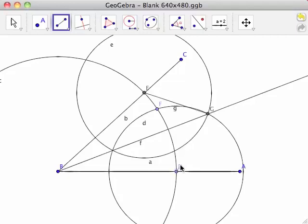BE and BD are congruent because they are radii of the same circle. EG and DG are congruent because they are radii of congruent circles. BG is a common side between triangles BEG and BDG.